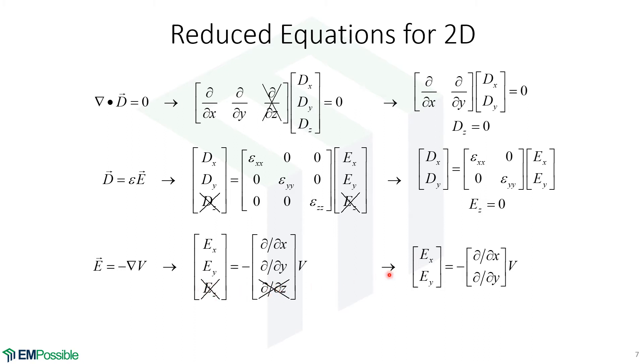Since we only have X and Y components of the electric field, it's only the epsilon XX and epsilon YY tensor elements that are even felt by the electric field. The electric field being related to the electric potential, there is no Z component. Also, our Z derivative is crossed off. So we really just have X and Y components of E being related to that electric potential. Because everything's uniform in the Z direction and we're simulating everything in the cross section, we have it this way now for two dimensions.